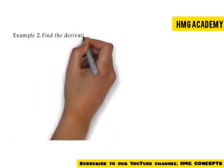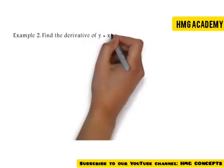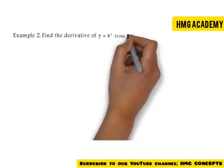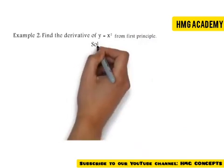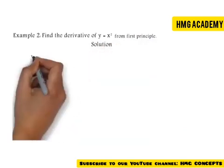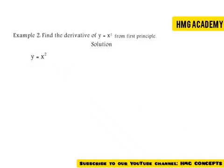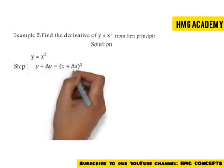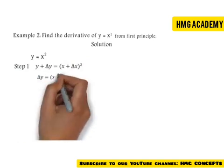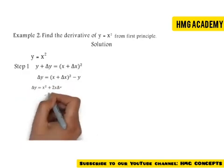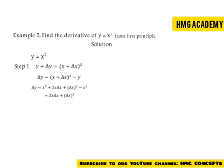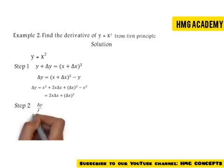Find the derivative of y equals x squared from first principle. We are still going to follow those three steps. First we write the question, then we increase both y and x to have y plus delta y equals x plus delta x, all squared. We make delta y by taking y to the other side, expand the brackets, and simplify further, so we have delta y equals 2x delta x plus delta x squared.